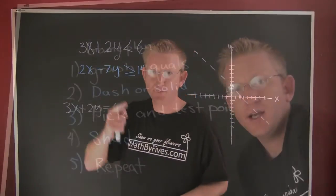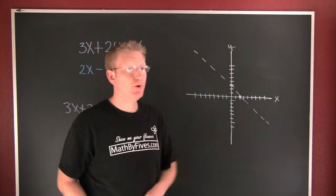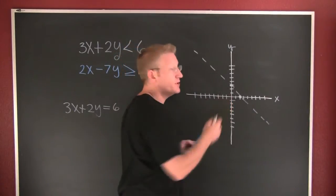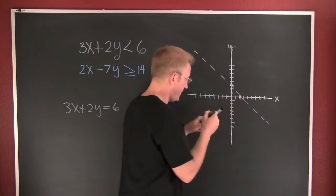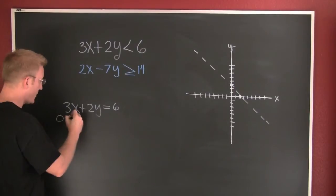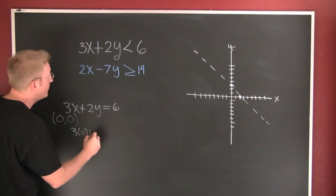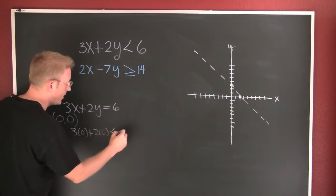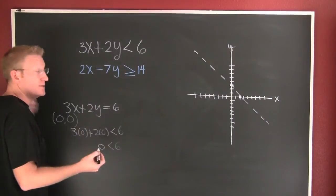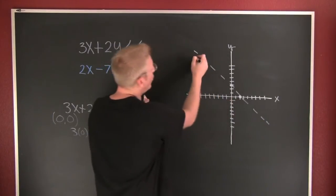Now I'm on to my next step. My next step I need to pick a point, any point. A nice point to pick is the origin, provided your line doesn't go through the origin. So the origin's at zero zero, so I'm testing this point right here. I'm testing zero zero, the origin. I'm gonna plug it back up into the original: three times zero plus two times zero, is that smaller than six? Is zero smaller than six? Yeah, zero smaller than six, that's a true statement, so I'm going to shade towards that point.